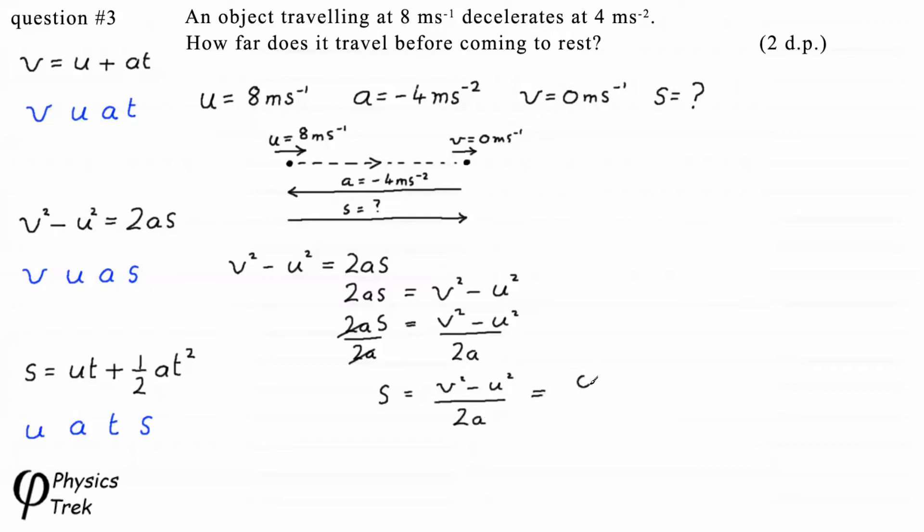Which equals 0 squared minus 8 squared divided by 2 times minus 4, which gives us minus 64 divided by minus 8, which gives us 8.